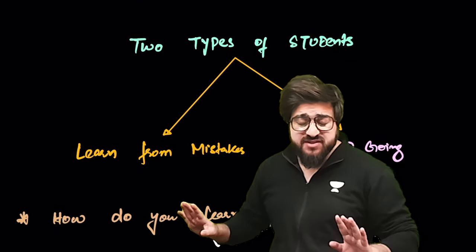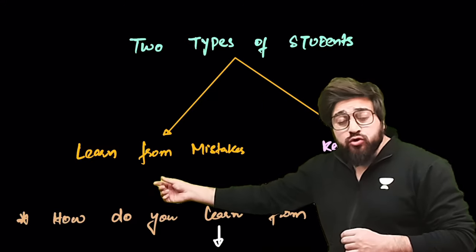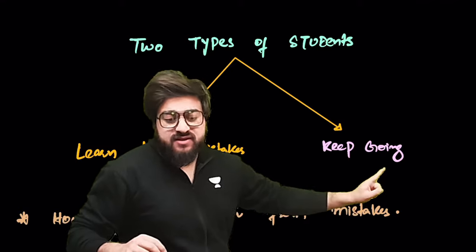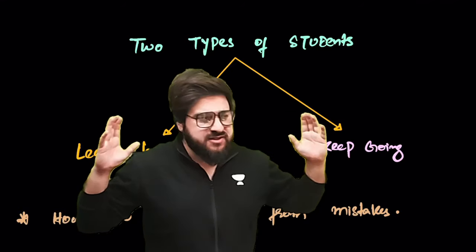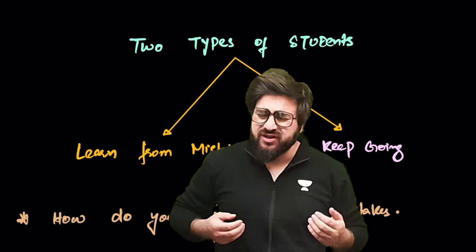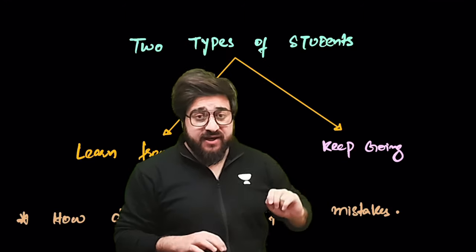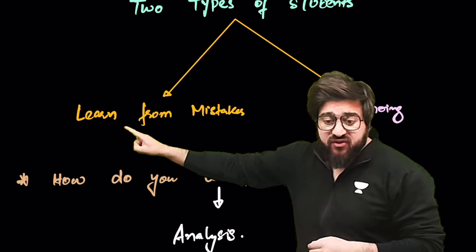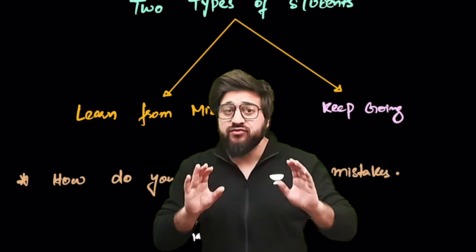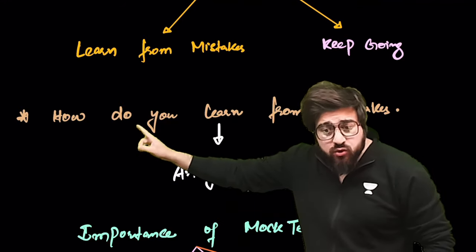There are two types of students. The first category is those who learn from their mistakes. The second category is those who just keep going — they got a low score in the mock test, lagged in some portion, and say 'let's just move to the next test.' We have to fall into the first category.